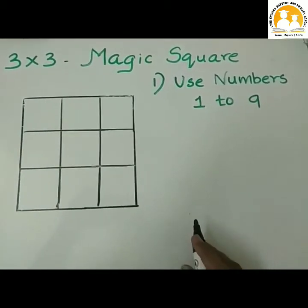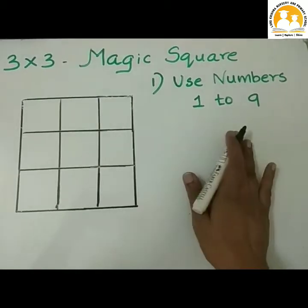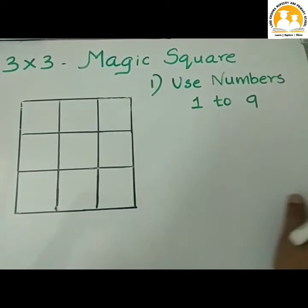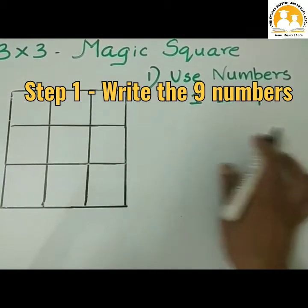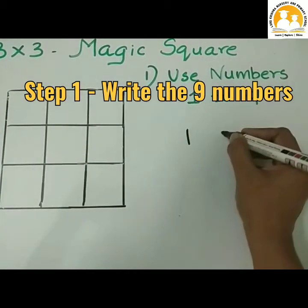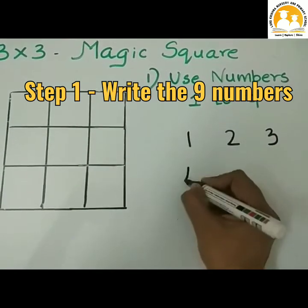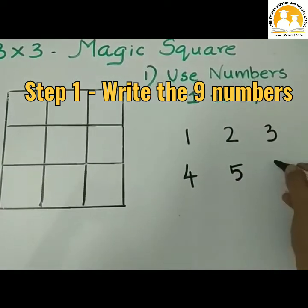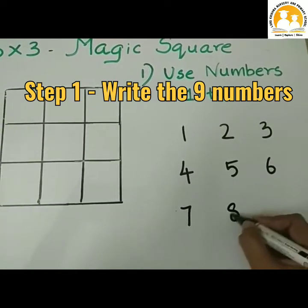Shall we form the magic square? The trick is to write the numbers from 1 to 9. I will write 1, 2, 3, 4, 5, 6, 7, 8, 9. This is step 1.